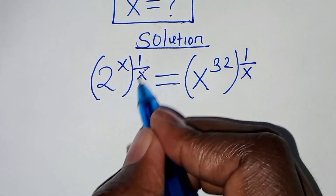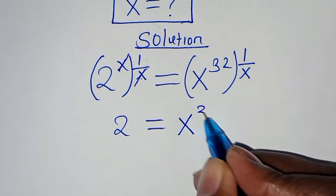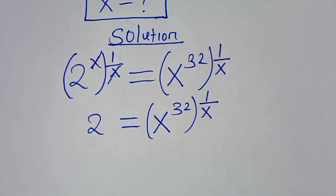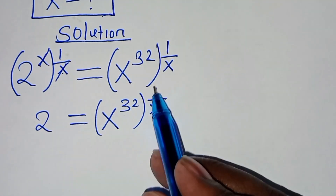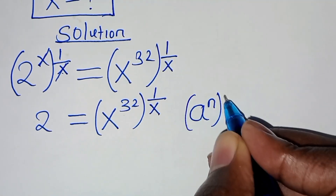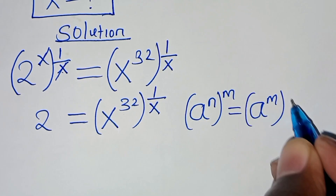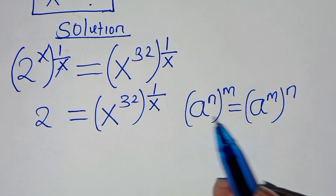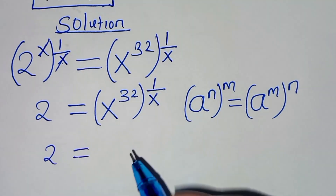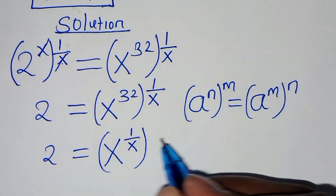After multiplying, x and x simplify, giving us 2 equals x to the power 2, raised to the power 1 over x. This expression is in the form a to the power n raised to the power m, which we can rewrite as a to the power m raised to the power n. Applying this exponent property gives us 2 equals x raised to the power 1 over x, raised to the power 2.